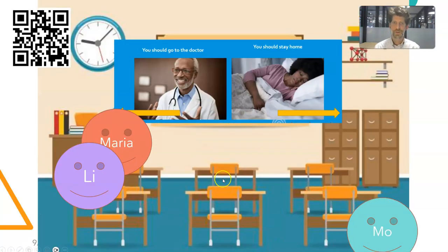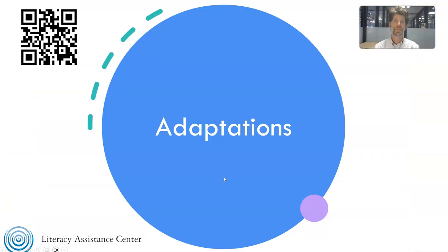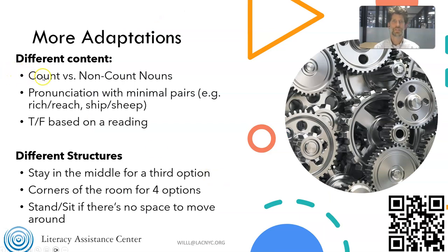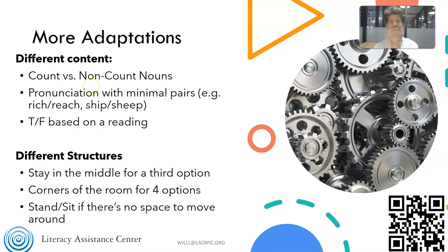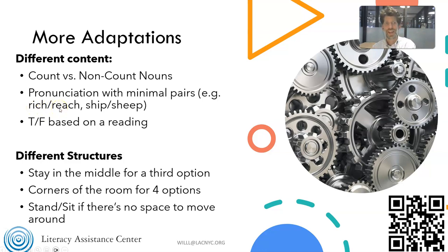Some adaptations of this, because it's very adaptable: you can do this with different content. For example, you can do count and non-count nouns — move to the left if it's count, move to the right if it's non-count. Or pronunciation with minimal pairs: students are working on the short-I and long-E sounds. You say 'rich' and they move left, or you say 'reach' and they move right. Then 'ship' versus 'sheep,' and so on.